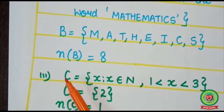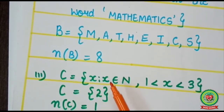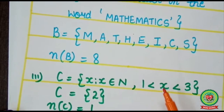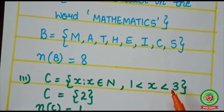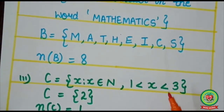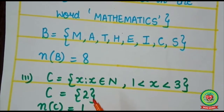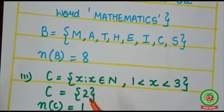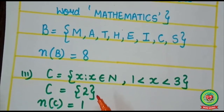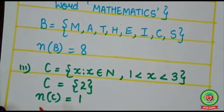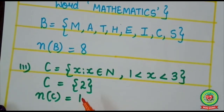Next example is set C = {x such that x belongs to natural numbers N, and x > 1 but x < 3}. Which natural number lies between 1 and 3? That is 2. So in roster form only one number comes, that is 2. Therefore the cardinal number of set C is 1, so n(C) = 1.